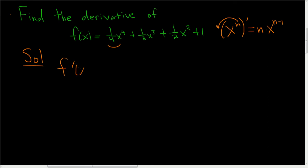So f prime of x. In this case, we bring the 4 downstairs. So we get 4 times 1 fourth, which is 1. And then x to the third power, plus 3 times 1 third.